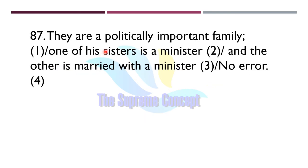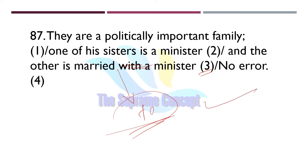Question number 87: 'They are a politically important family — one of his sisters is a minister and the other is married with a minister.' The error lies in part number three — instead of 'married with', we will use 'married to'. This is a prepositional error. The correct form is 'married to a minister'.